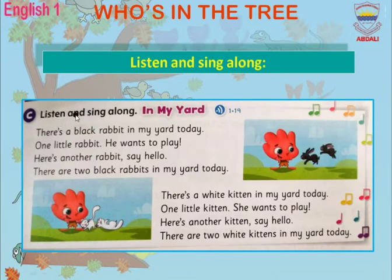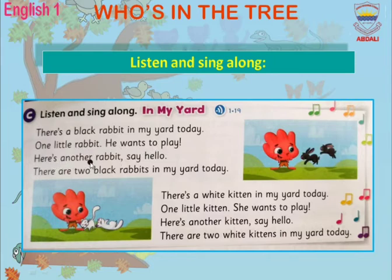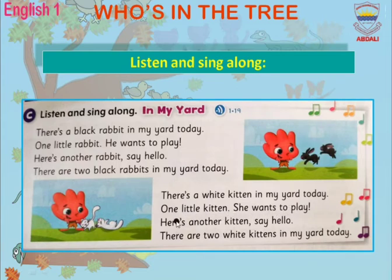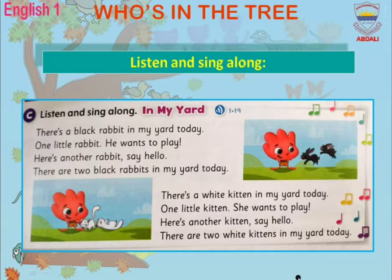Listen and sing along. In my yard, there's a black rabbit in my yard today. One little rabbit, he wants to play. There's another rabbit, say hello — there are two black rabbits in my yard today. There's a white kitten in my yard today. One little kitten, she wants to play. Here's another kitten, say hello — there are two white kittens in my yard today. Look at the picture: there are two black rabbits and two white kittens in this picture.